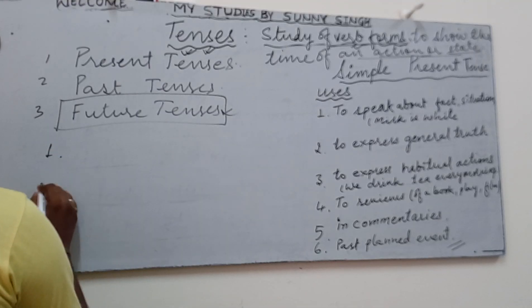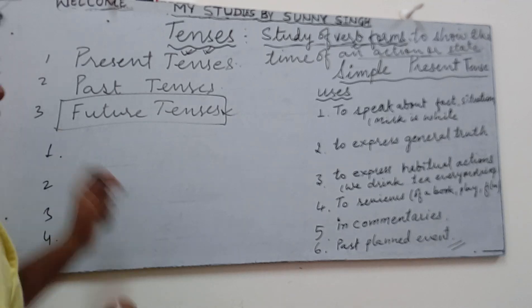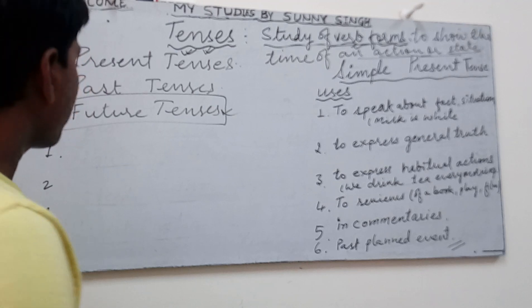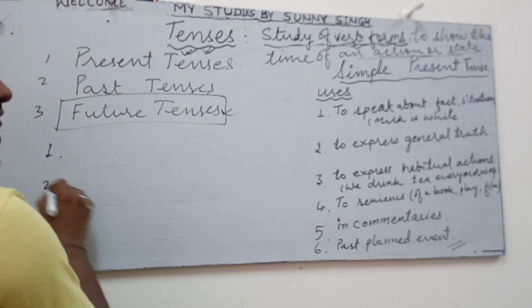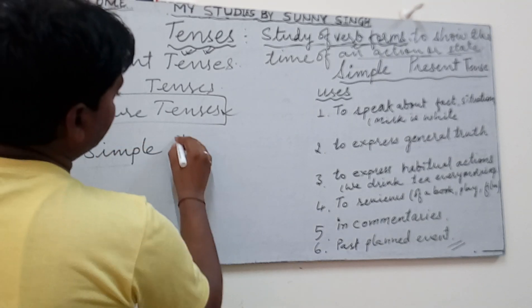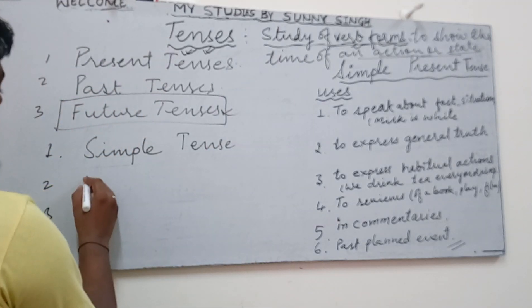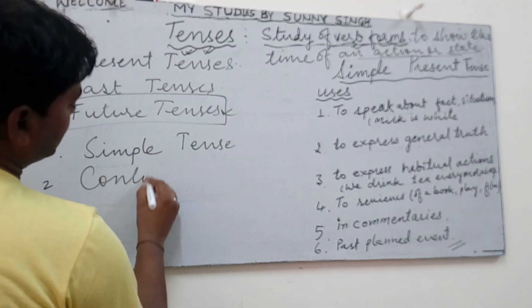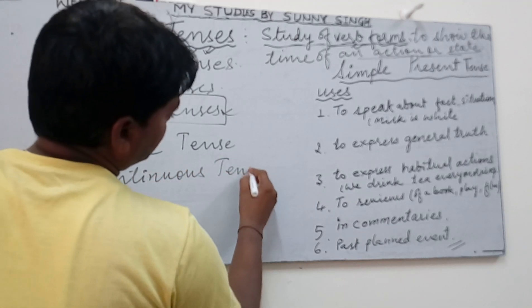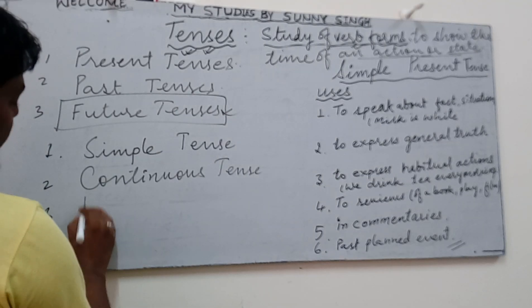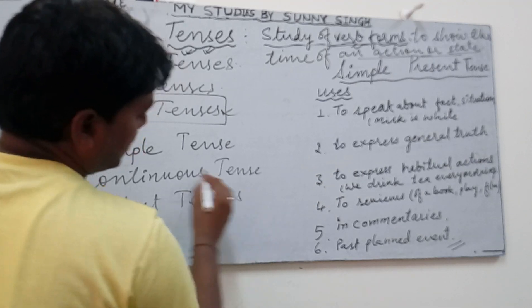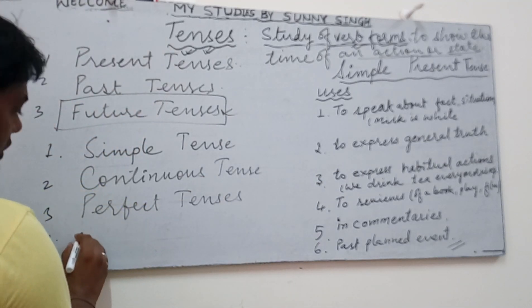All these three types of tenses have four particular forms, which I'll describe one by one in videos. The first one is called simple tenses, the second one is called continuous tenses, the third one is called perfect tenses, and the fourth one is called perfect continuous tenses.